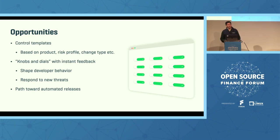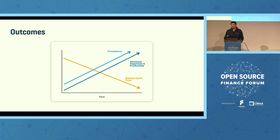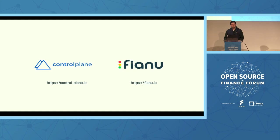It also gives you a path toward fully automated releases. When you get to the point where you're fully compliant with all the policies and procedures, you should be able to release without any human intervention — no change boards, no manual risk review, going straight to production. That's really the end goal for automated governance, with outcomes being that your release cycle times go down, compliance goes up, and most importantly, developer happiness and productivity increases as well. If any of this you found interesting or applicable to your company, please reach out — Andres is with Control Plane doing consulting in this area, and Fiano provides products in this space.